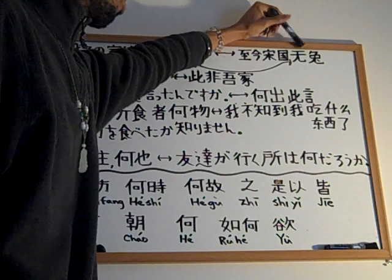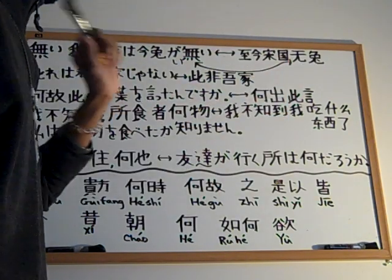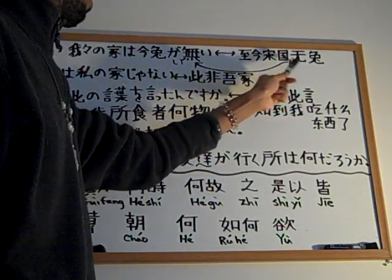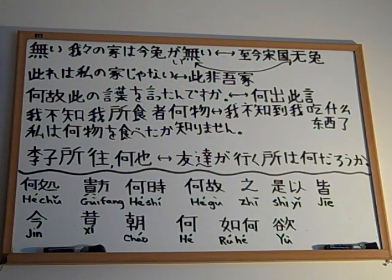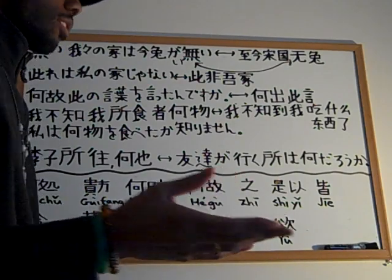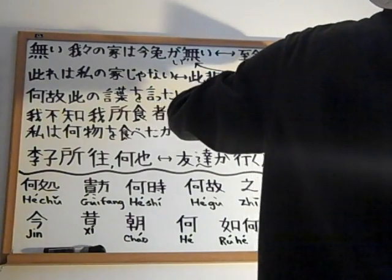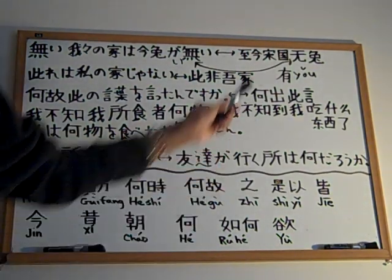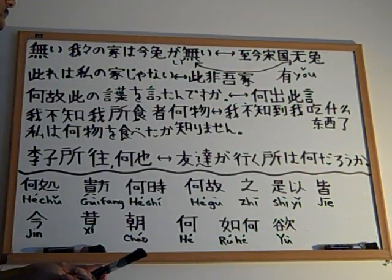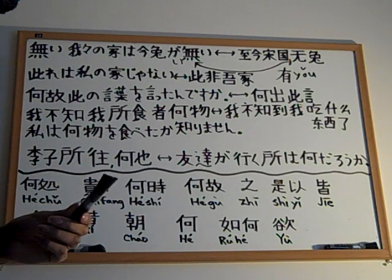So 'usagi' is rabbit in Japanese, and 兔 (tù) is rabbit in classical Chinese — I just thought it would be interesting to show you that 'nai' is pretty much the same. Now if you use 'arimasen,' the positive form uses the character 有 (yǒu), third tone, meaning 'to have.' So that's the first example — 'nai' (無) is used in classical Chinese.